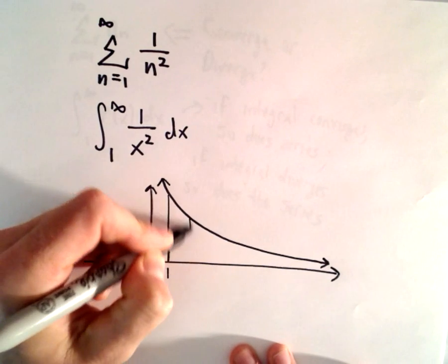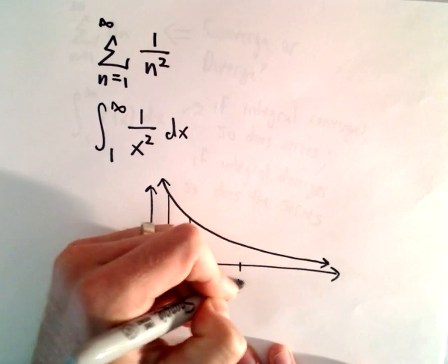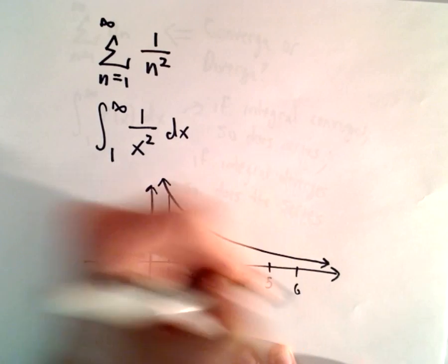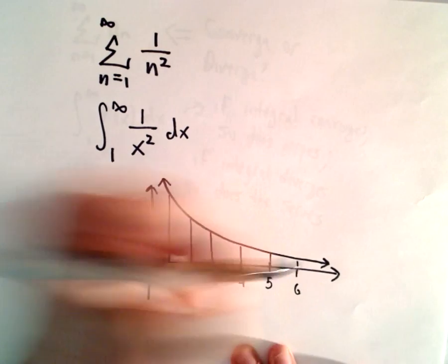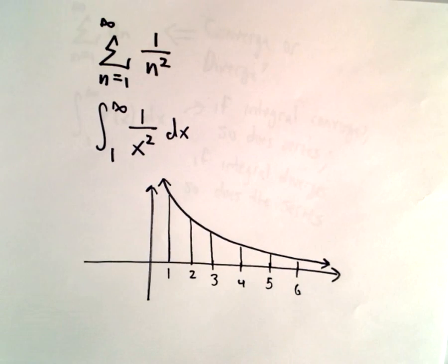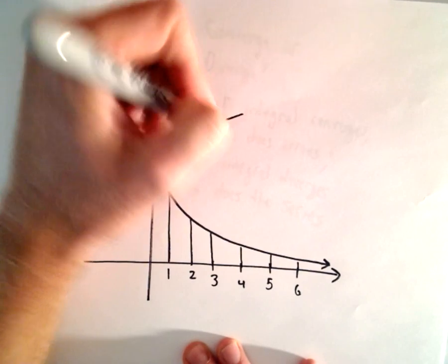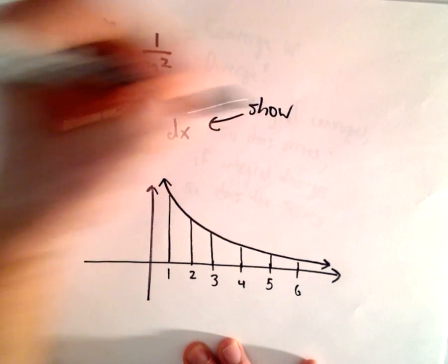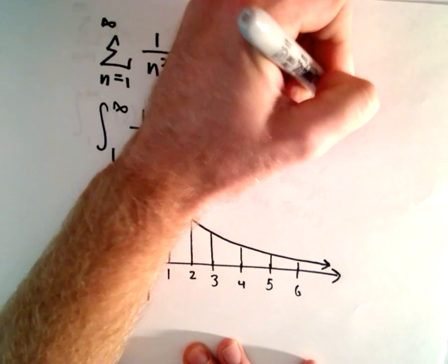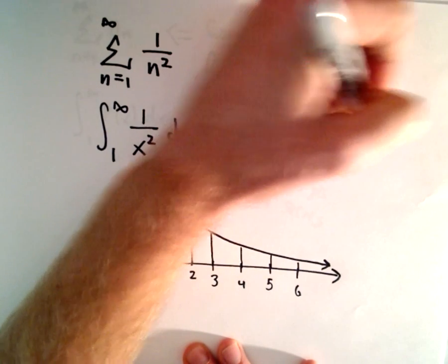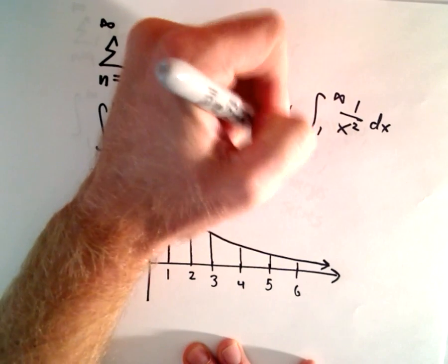On the graph there's 1, 2, 3, 4, 5, 6, and so on. I'm going to chop this integral up — you'll see why in just a second. You can show by integrating that the integral from 1 to infinity of 1 over x squared dx is convergent.